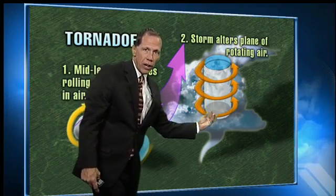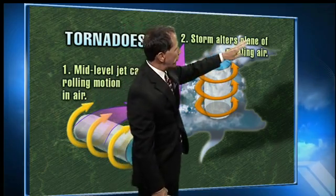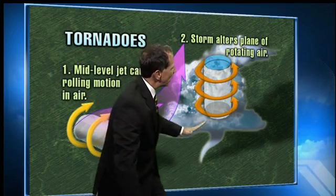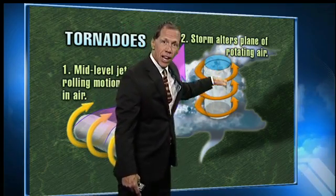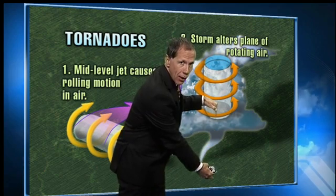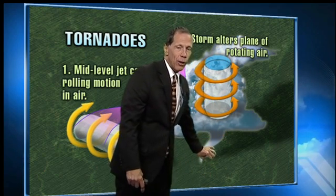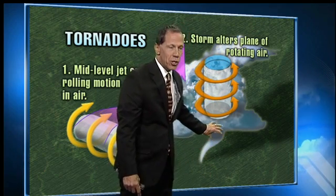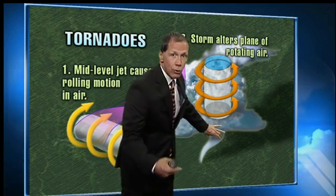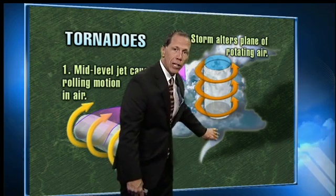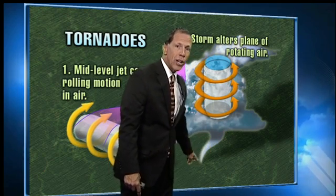It causes this funnel to form, so the storm alters the plane of that rotating air — in other words, it stands it up. Then the tornado will drop out of the cloud, and you don't have to see the cloud all the way down to the ground. This is just condensed water vapor, basically a cloud, but a lot of times it's just a column of air. You can see dust at the bottom of the tornado, and you're not necessarily even seeing what appears to be a full tornado, but it is there.